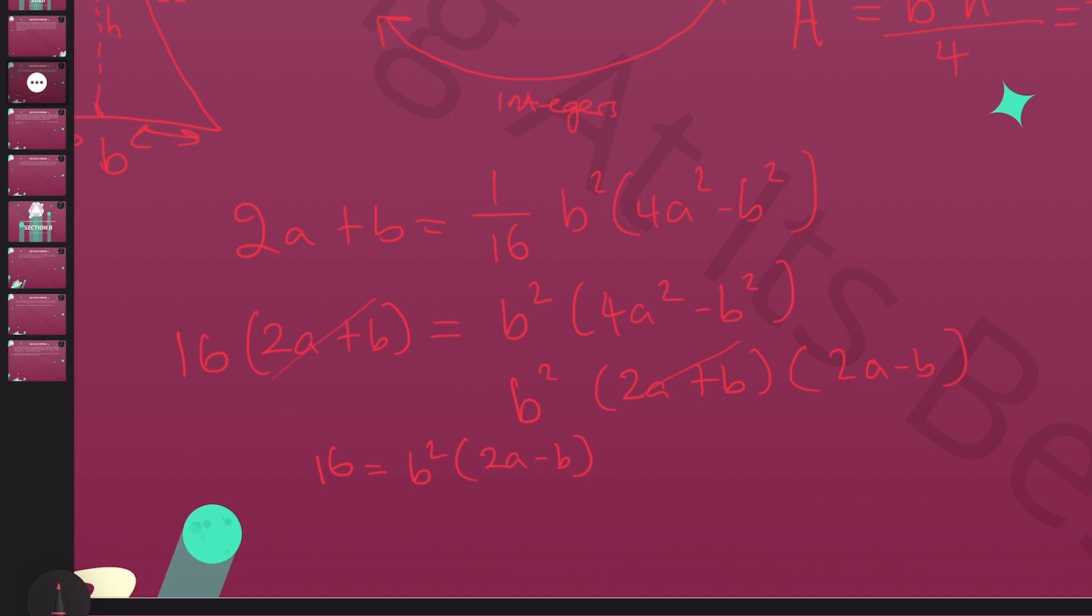Now we have something that we can use. We know that B is an integer, which means that B² is an integer. We know that B² needs to divide into 16, which means that B must equal 1, 2, or 4. There are no other possibilities.